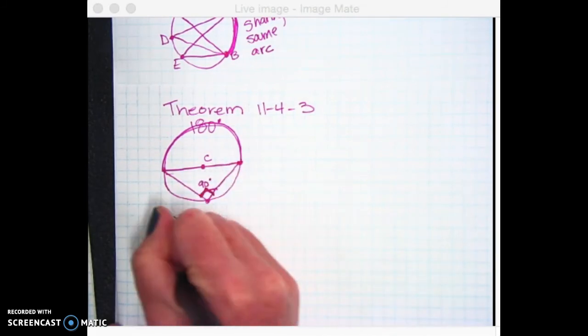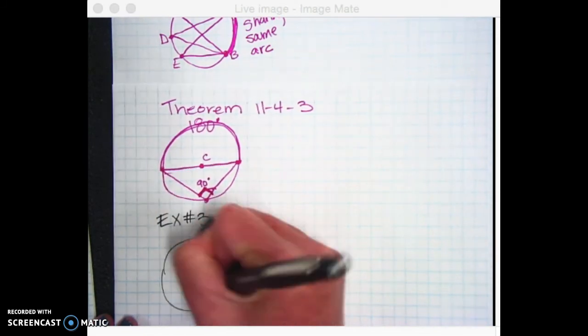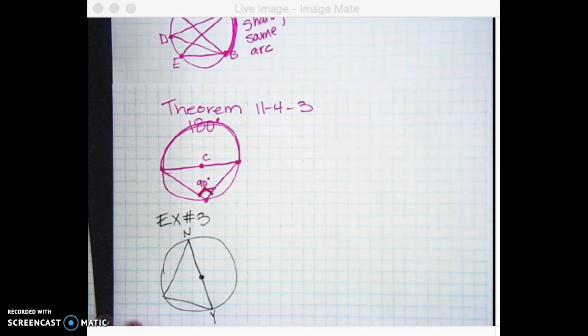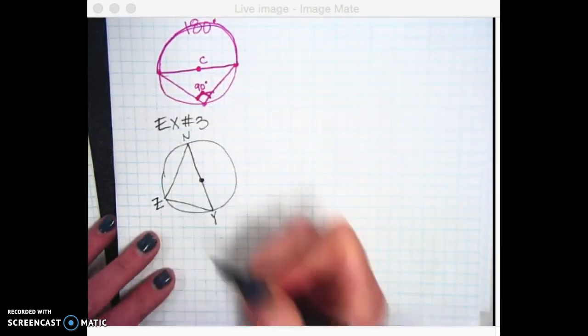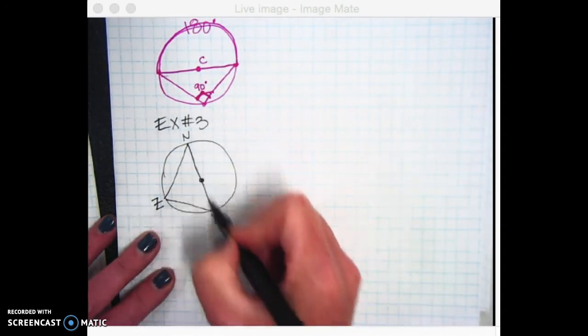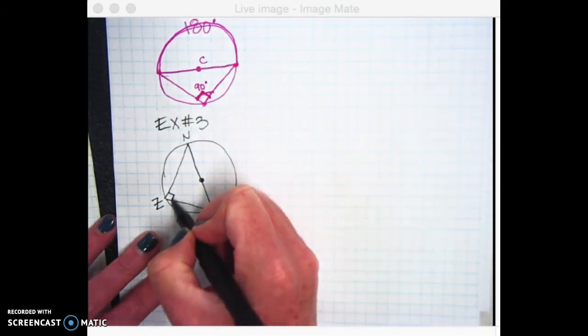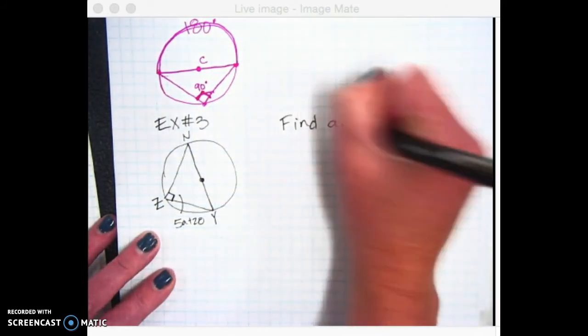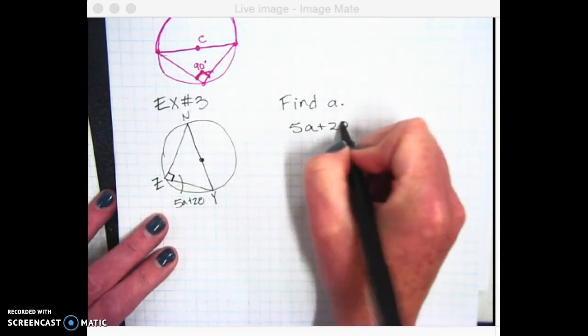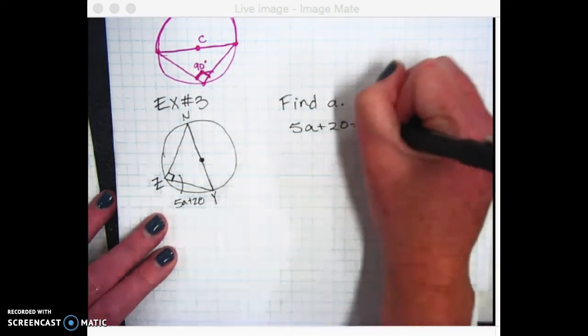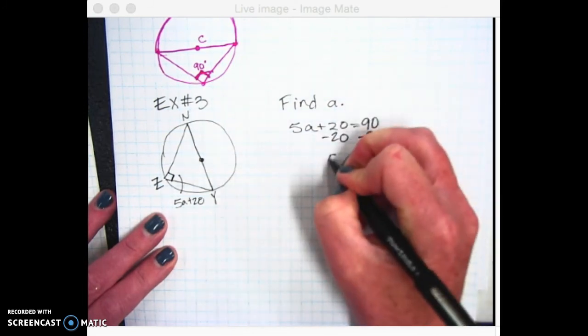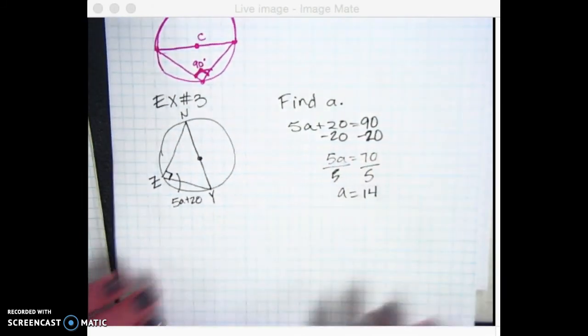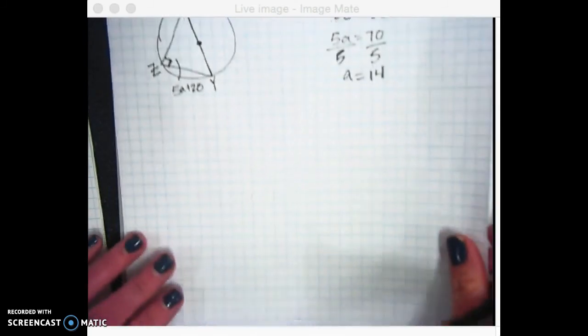Example number three. We're going to start with a circle, and we're going to draw a diameter. So it's going to go through the center from N to Y. It's going to create an inscribed angle over here. We'll call the vertex Z. And if it's a diameter, it's going through the center. So we've got 180 over here. That makes this angle right here 90 degrees. So if it's 5A plus 20, if we're asked to find A, all we do is we take that 5A plus 20 and set it equal to 90. Subtract 20 from both sides. And we get 5A equals 70. Divide both sides by 5. So A is 14.